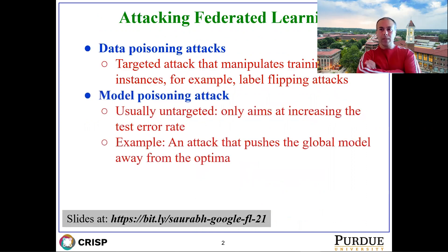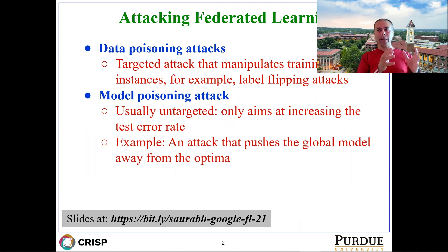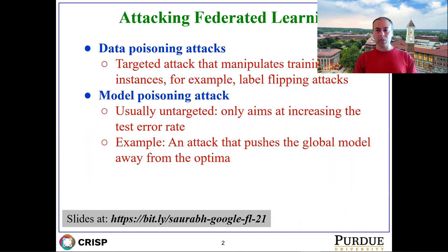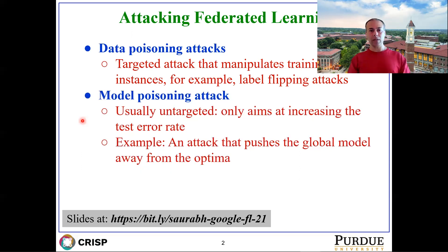There has been a lot of emphasis on attacking federated learning. The two broad classes of attacks within scope of our work are: data poisoning attacks, where you target the data on which the model is being learned and poison some data items strategically — for example, flipping the labels. The second class is the model poisoning attack, which is usually untargeted in the sense that the goal is to degrade the accuracy of the model rather than targeting specific classes.